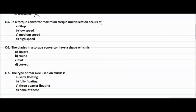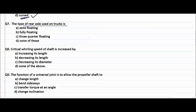In a torque converter maximum torque multiplication occurs at stop, low speed, medium speed, high speed. Low speed and all these speeds are not right answer. Maximum torque multiplication occurs at stop. Next question, the blades in a torque converter have a shape which is curved. The type of rear axle used on trucks is fully floating.